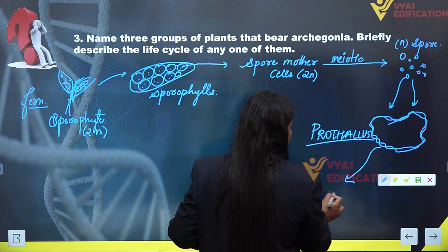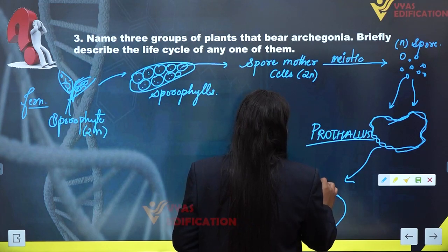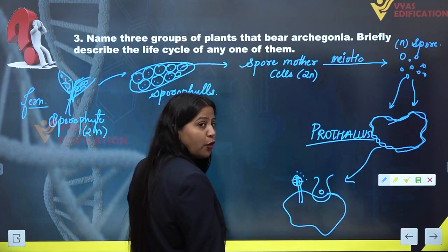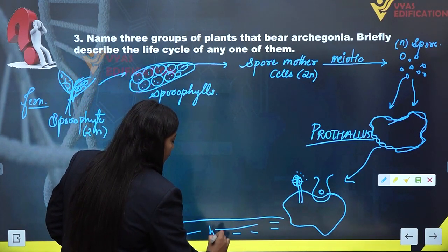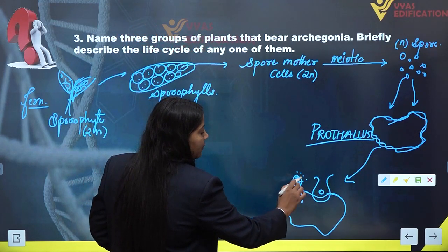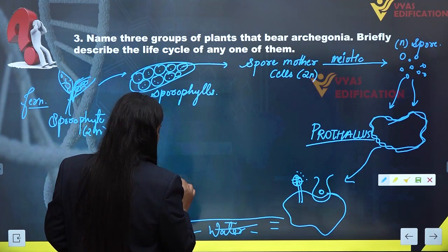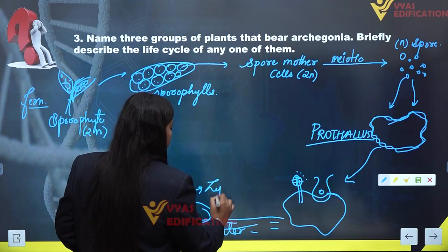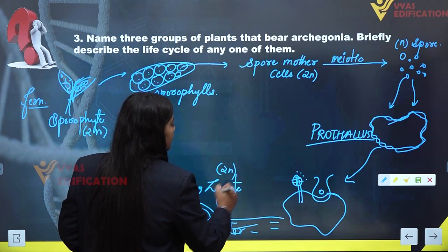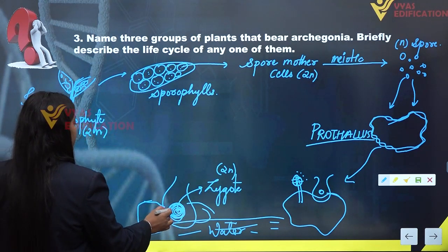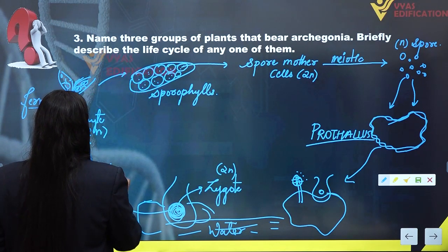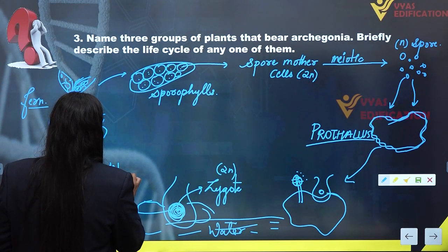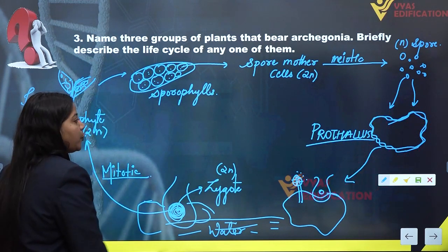The prothalus develops anthridium and archegonium, inside which the egg cells and male gametes are formed. With the help of water, the antherozoids from the anthridium travel to the archegonium and fertilize it, forming a zygote. This zygote is diploid, and it undergoes mitotic divisions to form again a new sporophytic plant body, which is also diploid.